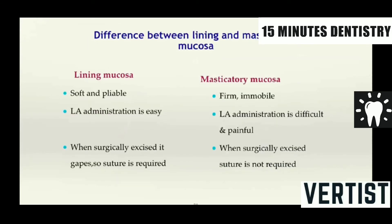There are some differences between lining and masticatory mucosa. Lining mucosa is soft and pliable, hence administration of local anesthesia is easy when extracting a tooth. When you surgically perform an excision, it gaps because it is very pliable and soft, so sutures are required. Whereas masticatory mucosa is firm and immobile, therefore local anesthesia administration is difficult and also painful. When surgically excised, sutures are not required.